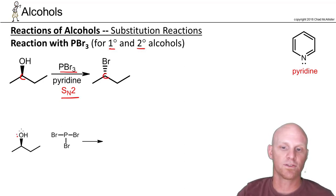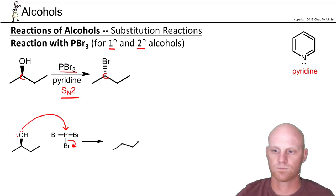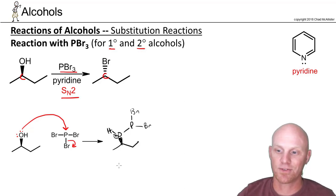Let's take a look at how the mechanism works here. So first step is your alcohol is going to come and attack phosphorus, causing one of the bromines to leave. So your phosphorus is still bonded to two bromines. And then you still have another bromide ion now floating around as well.